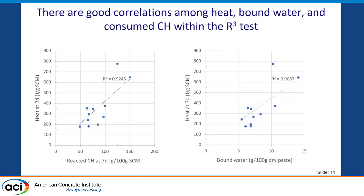We looked at correlations between R3 metrics. For our 11 materials, on the left we see the amount of reacted calcium hydroxide versus heat release — there is a reasonably good correlation. On the right, we see bound water versus heat release — again, a reasonably good correlation.